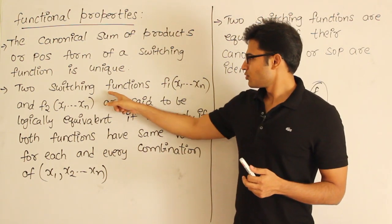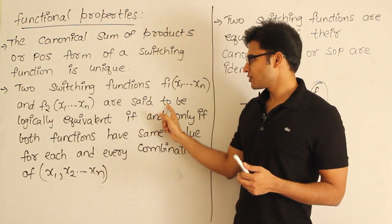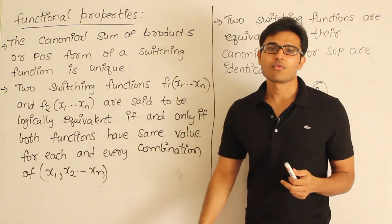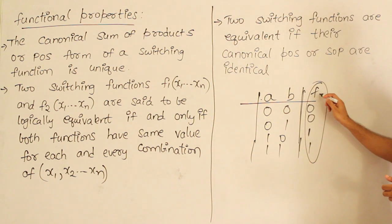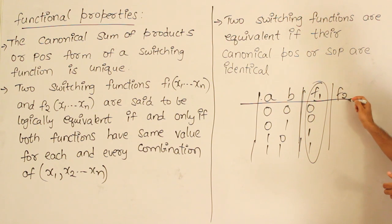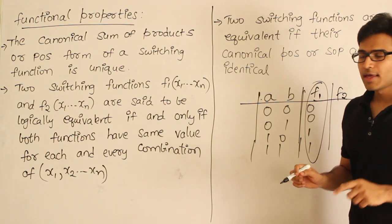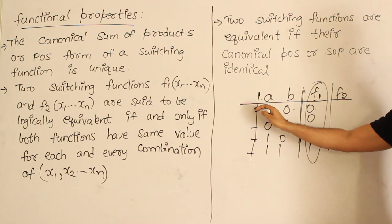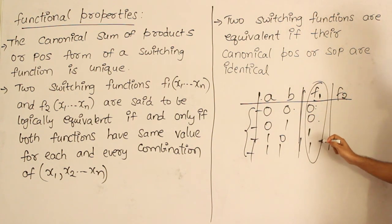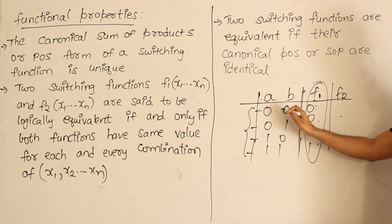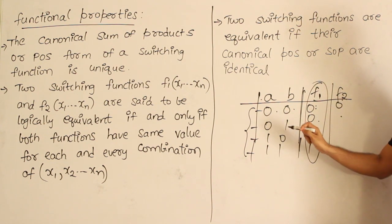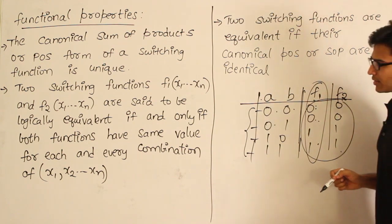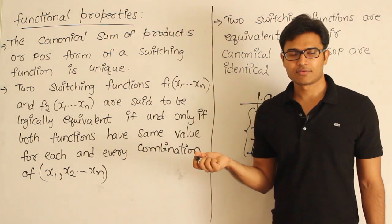Two switching functions F1 and F2 are said to be logically equivalent if and only if the functions have the same value for each and every combination. For every combination — 0 0, 0 1, 1 0, 1 1 — if both values produced by the functions are the same, for example if F1 is 0 then F2 has to be 0, then only we say the two functions are equivalent. Here we use the word 'equivalent' rather than 'equal.'